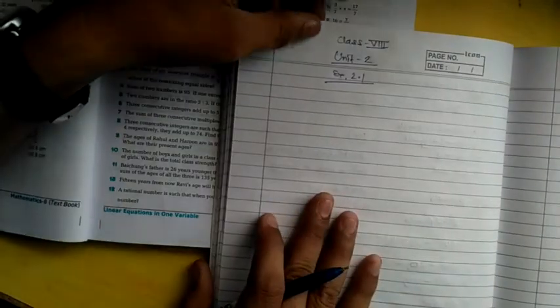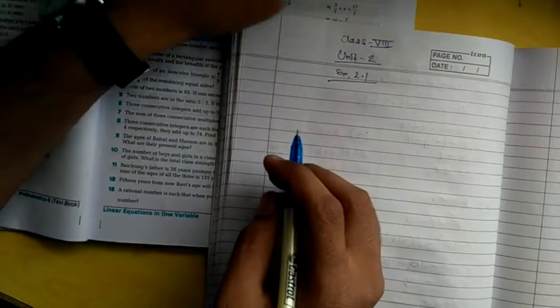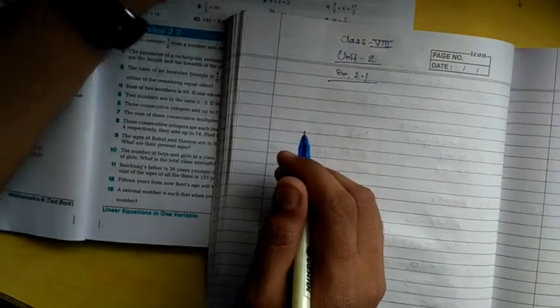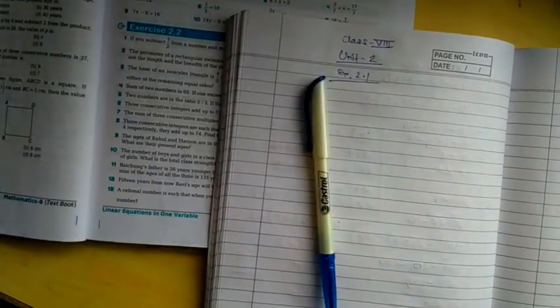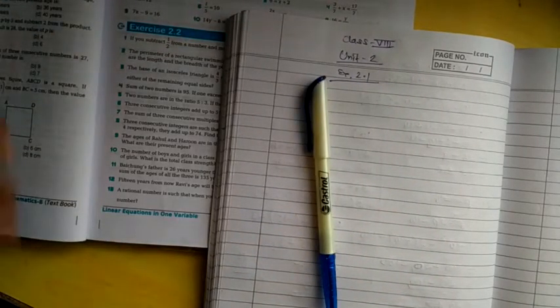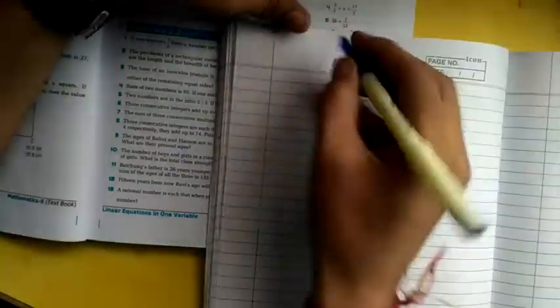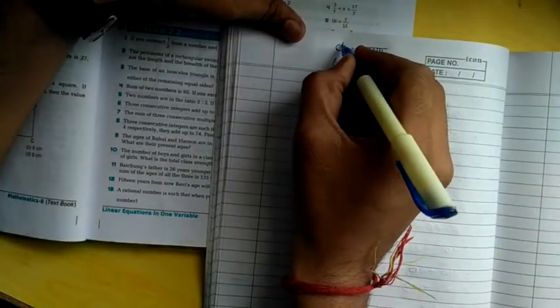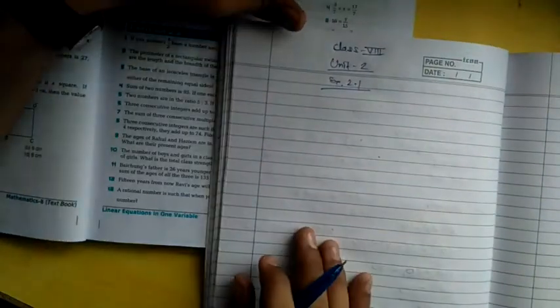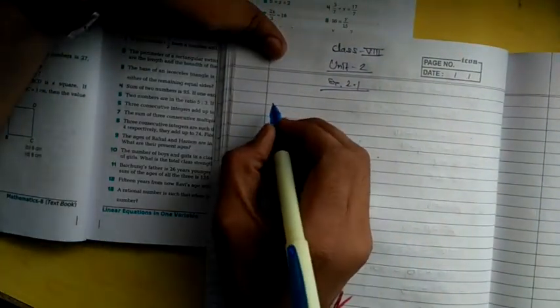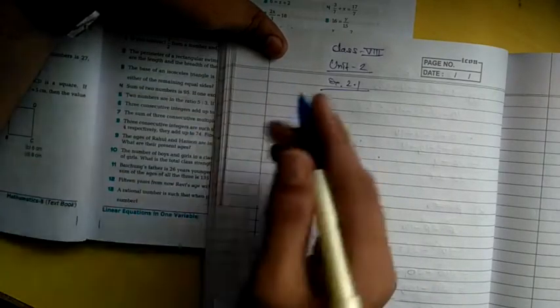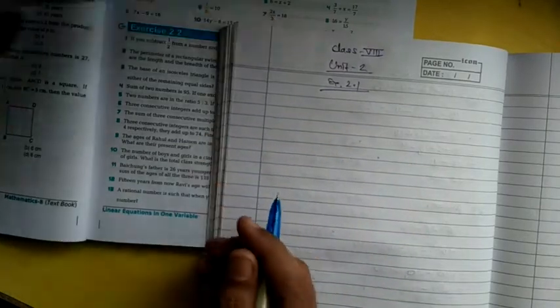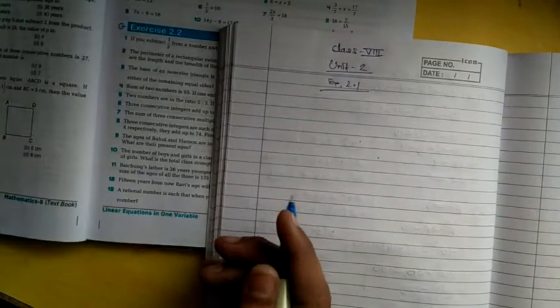Before starting exercise 2.1, we should discuss some important terms of linear equation of one variable. As you know, I have sent the PDF of algebraic expression. In this PDF I have discussed some very important terms of algebra. So now I am explaining about the linear equation of one variable. First of all, I want to discuss about the algebraic expression.